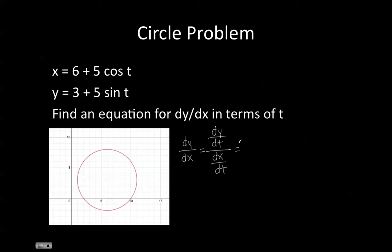The derivative of y with respect to t equals 5 cosine t, and the derivative of x with respect to t is negative 5 sine t. We can rewrite this as negative cotangent t. So this is our dy/dx.